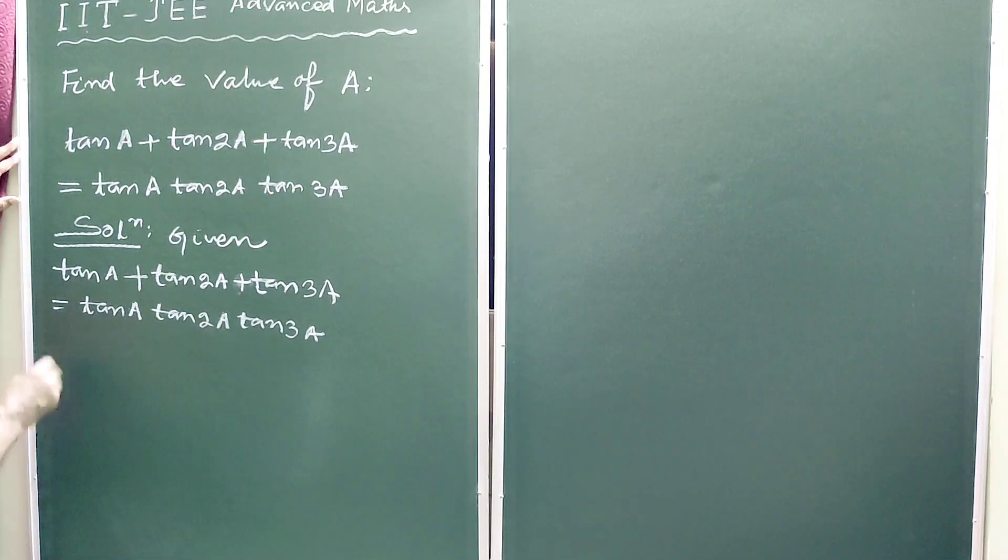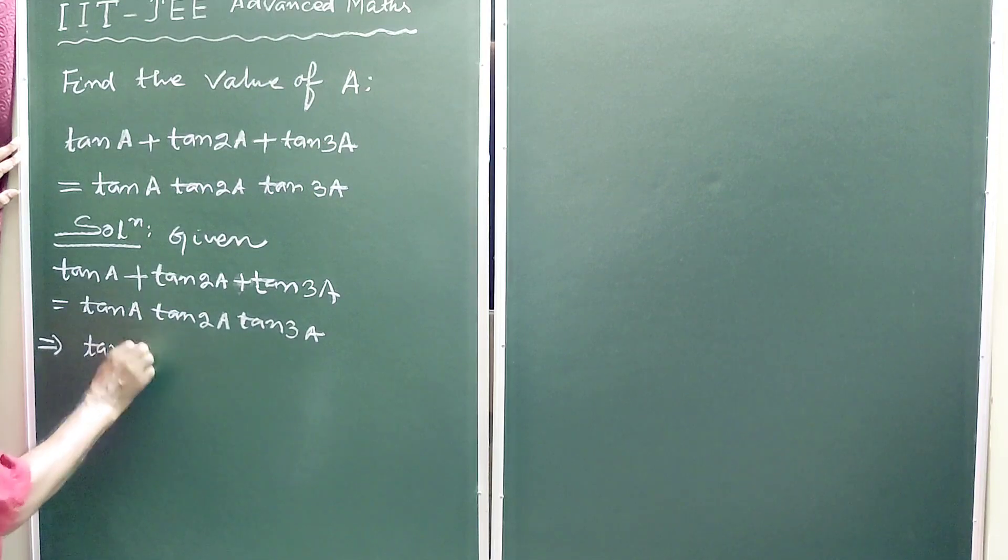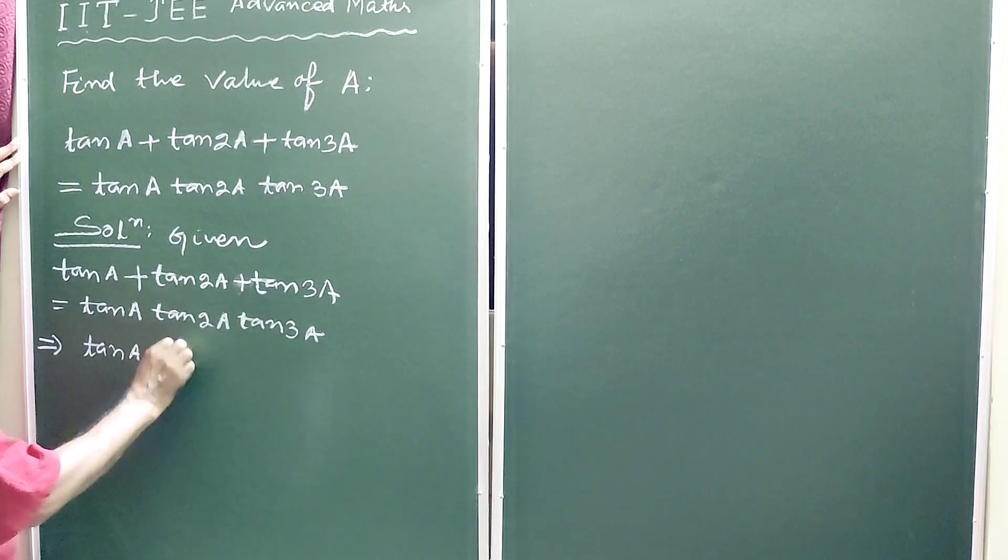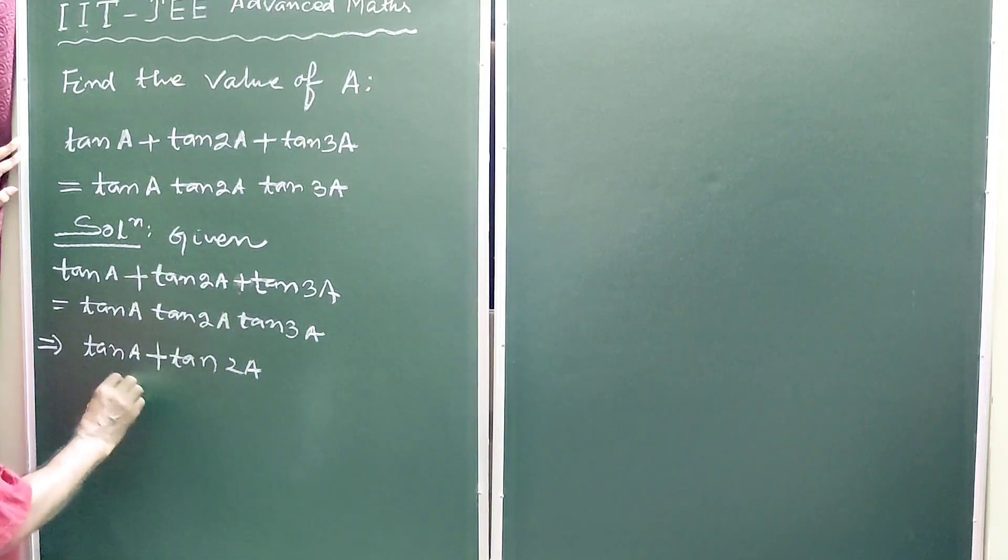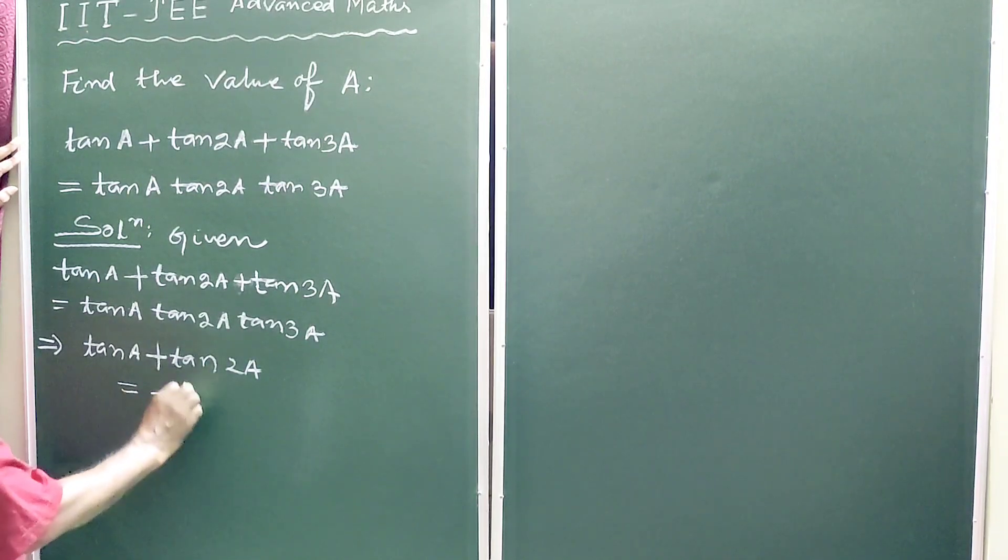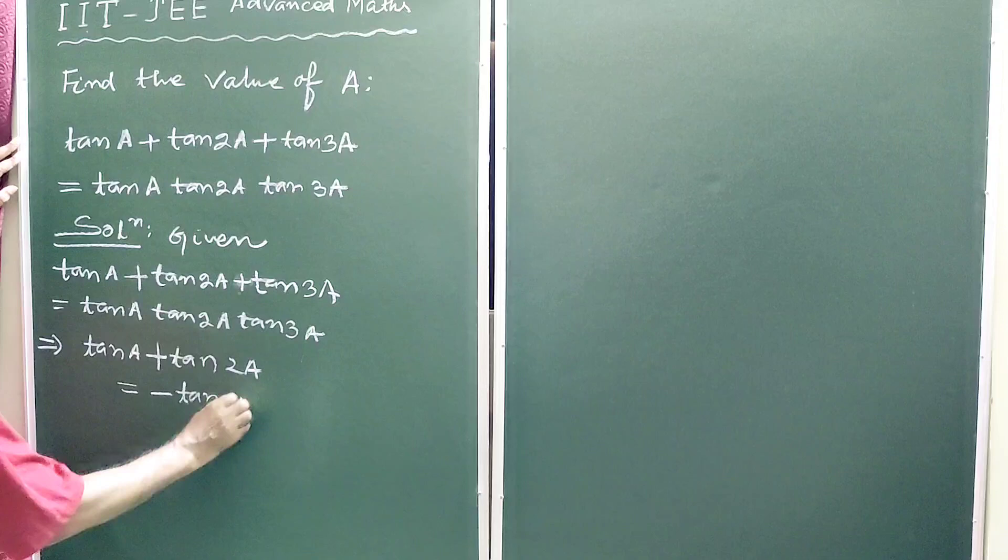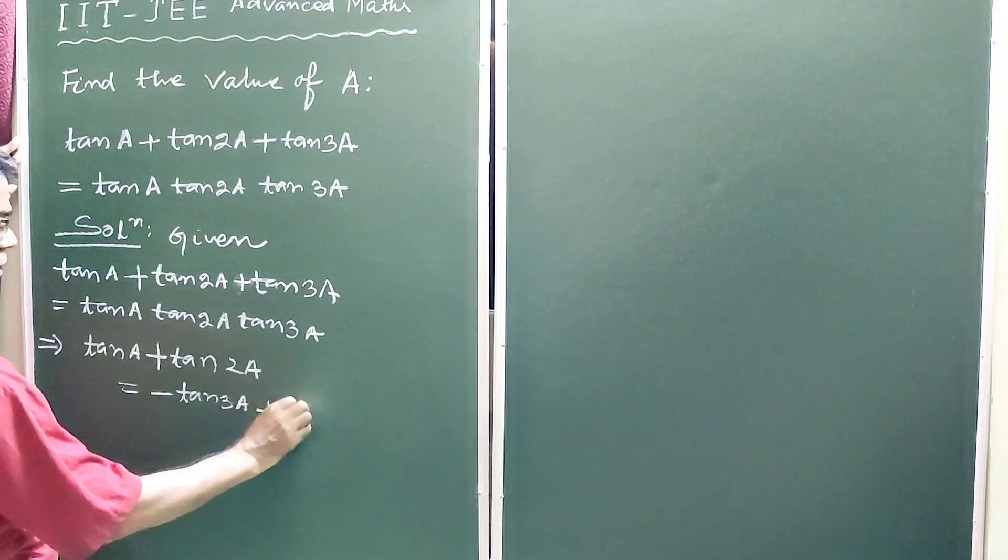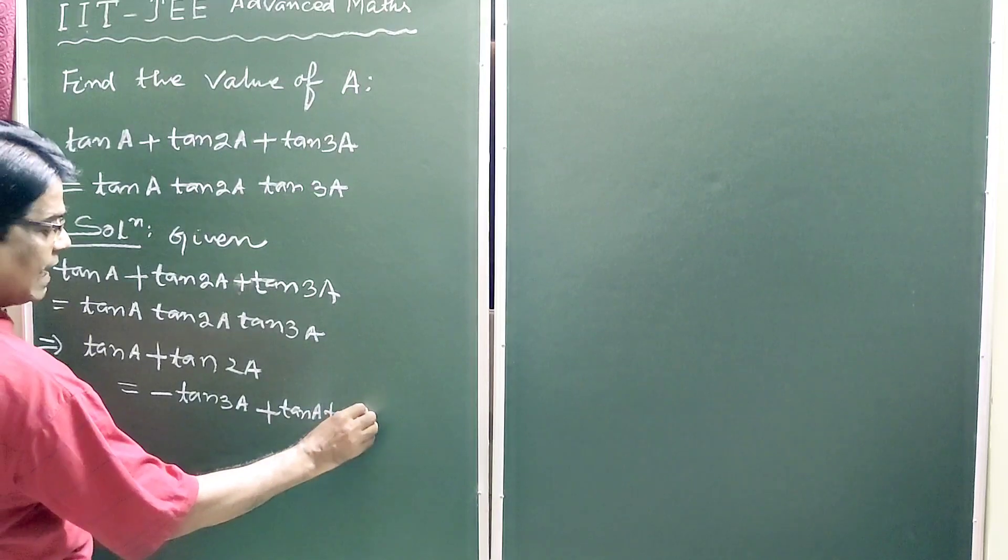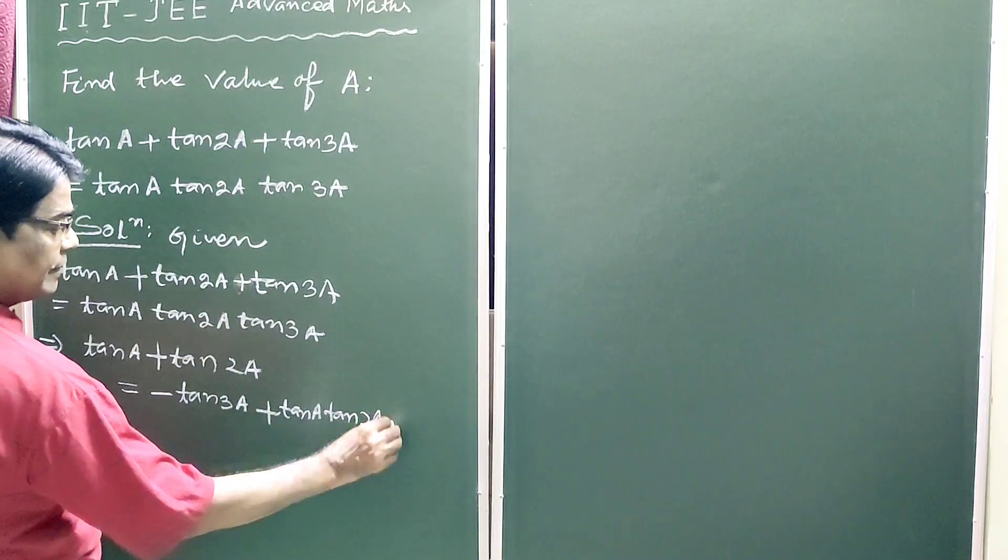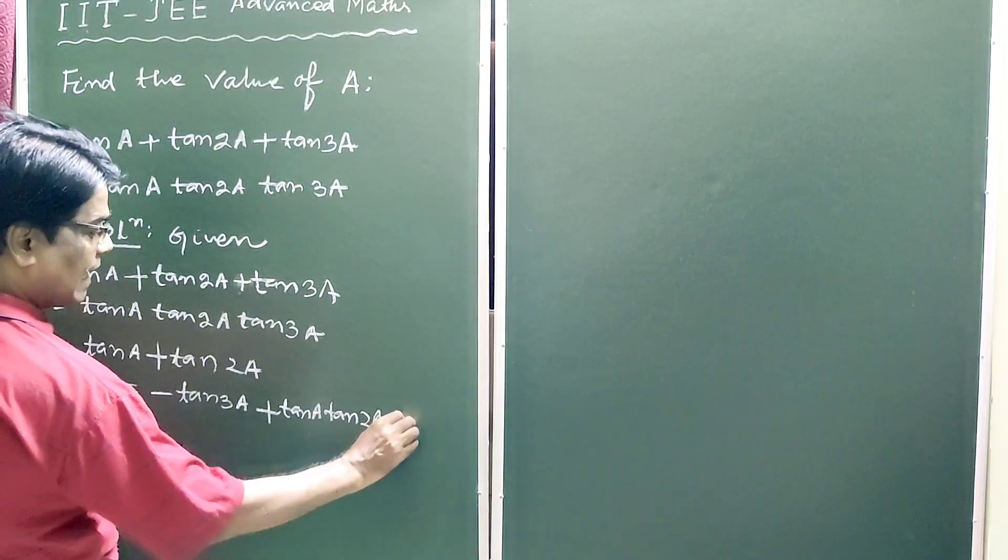So this is the expression given. This implies tan A plus tan 2A equals minus tan 3A plus tan A into tan 2A into tan 3A.